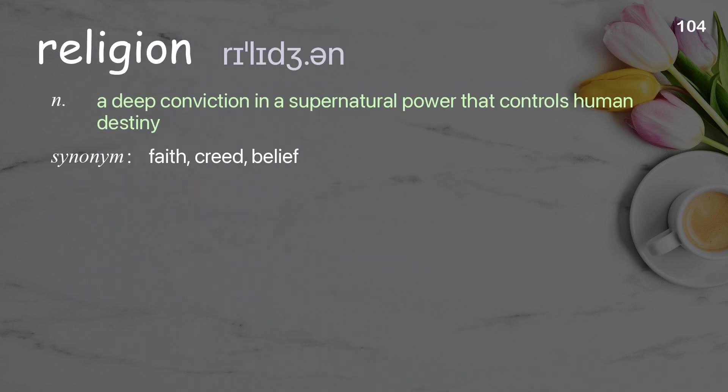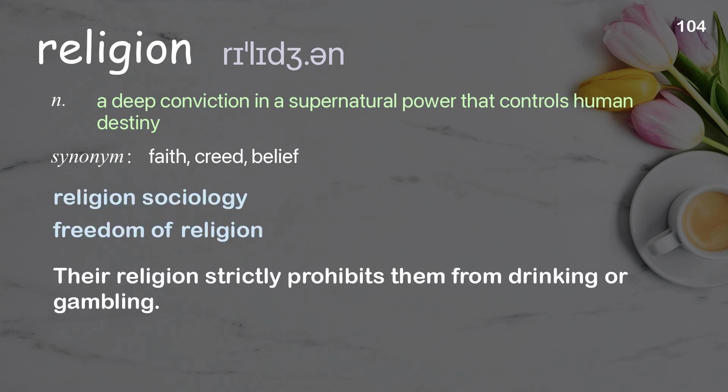Religion — a deep conviction in a supernatural power that controls human destiny. Examples: religion sociology, freedom of religion. Their religion strictly prohibits them from drinking or gambling.